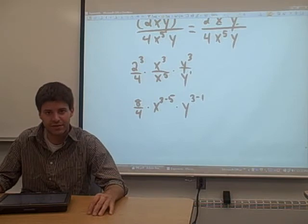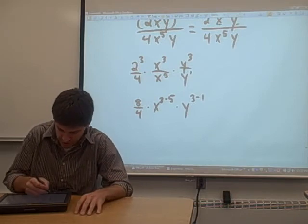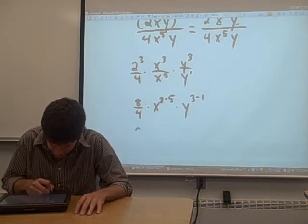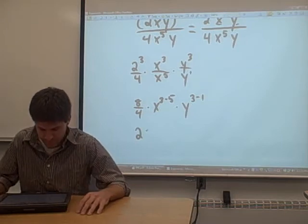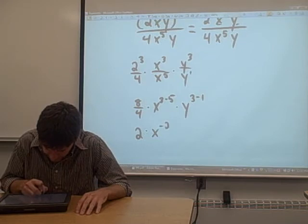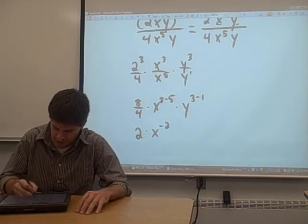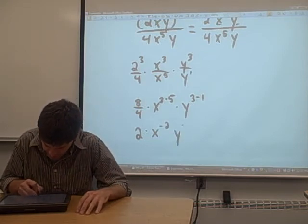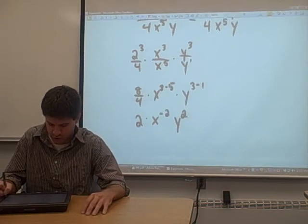Now, we can put everything together and simplify this. 8 divided by 4 is just 2. 3 minus 5 is just negative 2, so we get x to the negative 2. And 3 minus 1 is 2, so we get y to the second power, y squared.